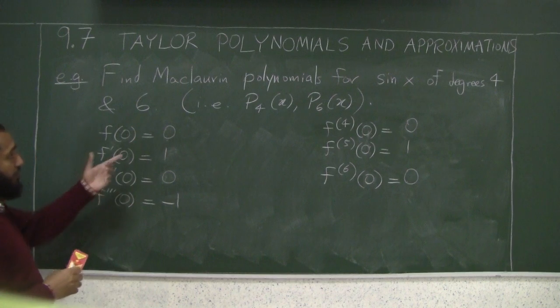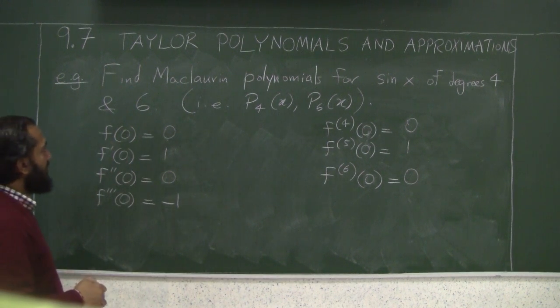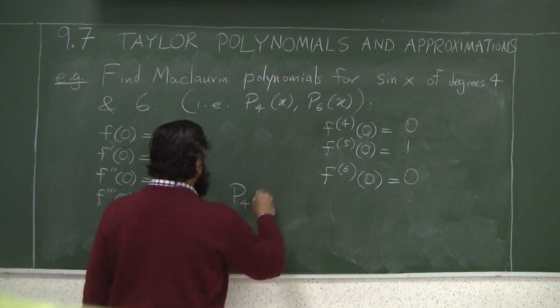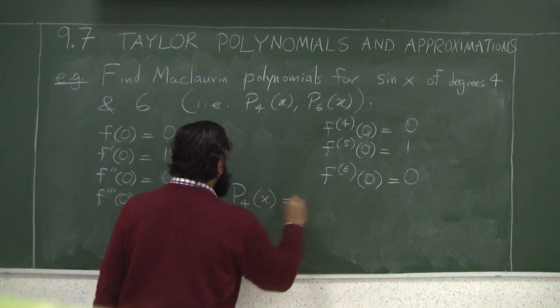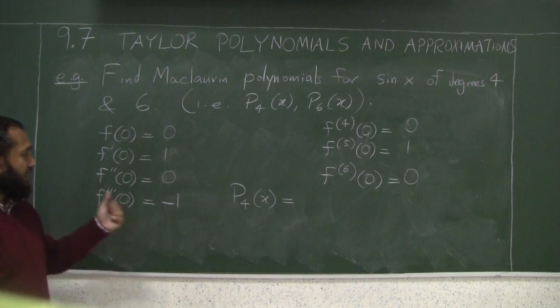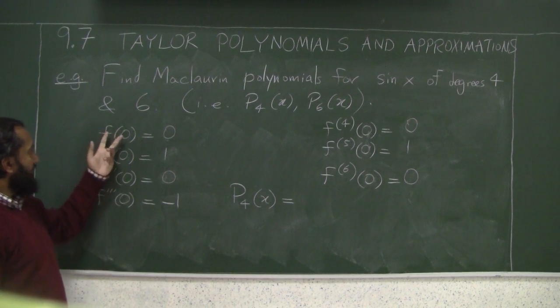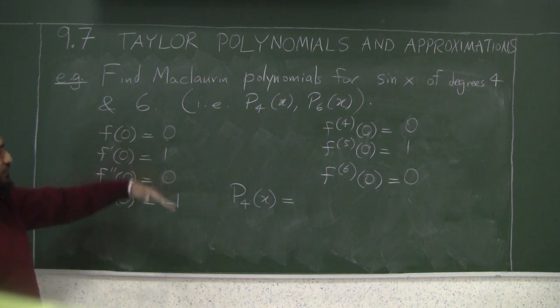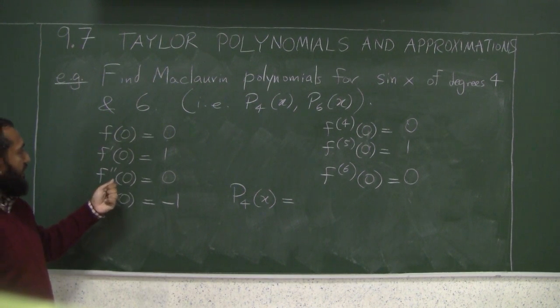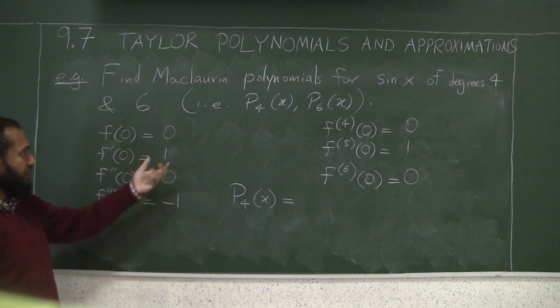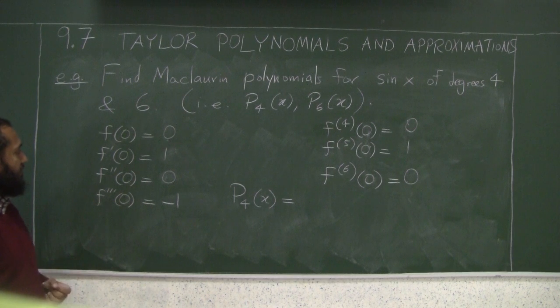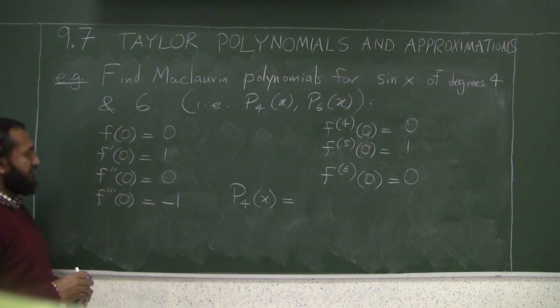So we are ready to write down our approximating polynomials, the Maclaurin polynomials. So P4 of x would be, remember it's the value of the function, the ith derivative - 0 derivative, 1st, 2nd, 3rd, 4th - times x to the appropriate power divided by the i factorial.